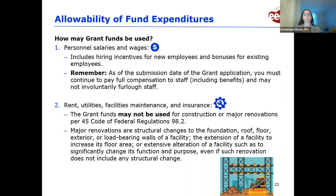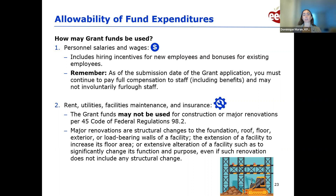Category one is personnel salaries and wages, including benefits like hiring incentives for new employees and incentives for existing employees. Remember, you can always increase employee compensation but you cannot decrease employee compensation or furlough employees. Category two is rent, utilities, facilities maintenance, and insurance. Utilities could be your water and electric bills, and facilities maintenance could be something like an air conditioning system. You can use funds for maintenance and minor renovations, but not for construction or major renovations as defined by the Code of Federal Regulations.